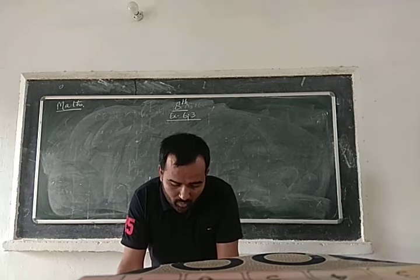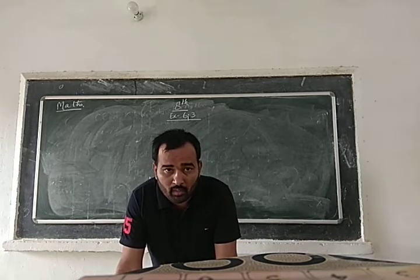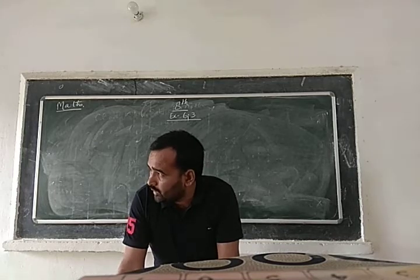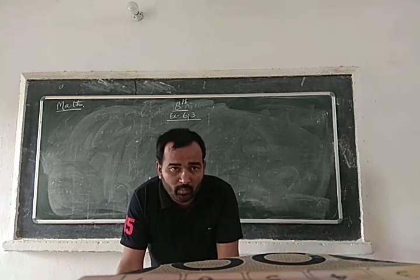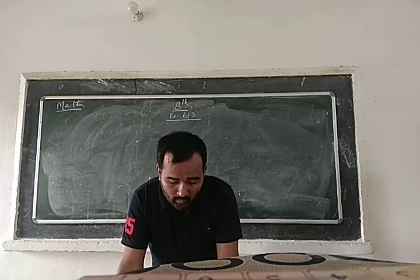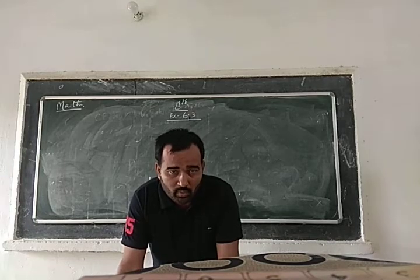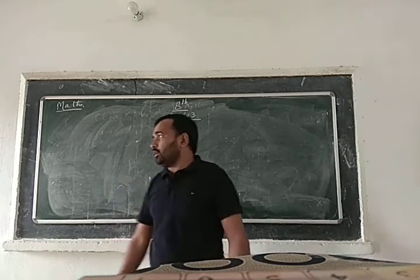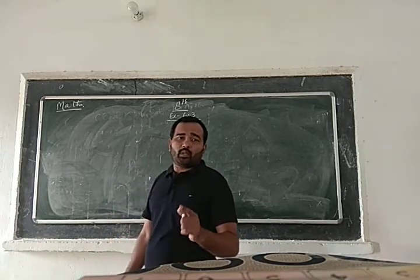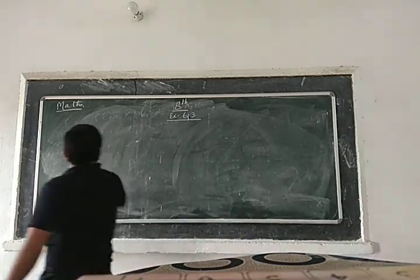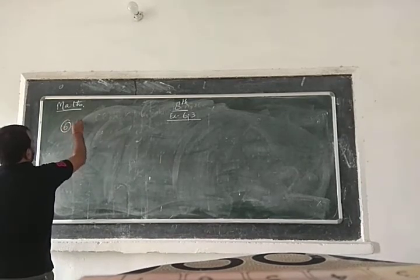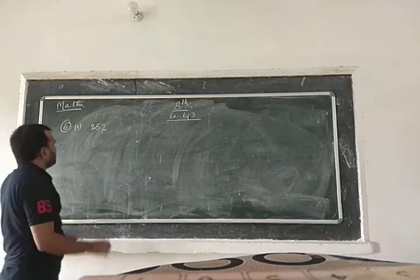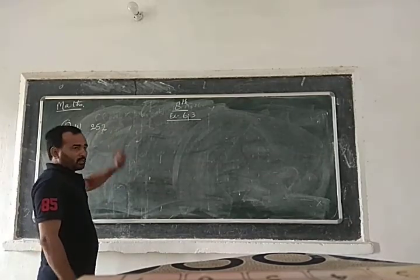The question asks to find the number by which it should be divided to make it a perfect square. Question number 6, the number is 252. This is similar to the previous question with a small difference.